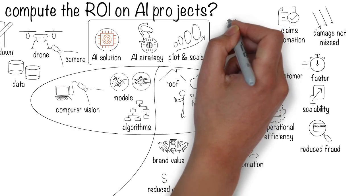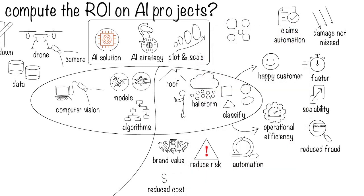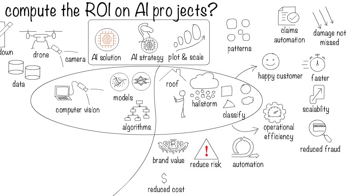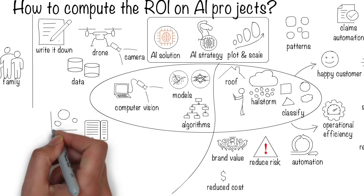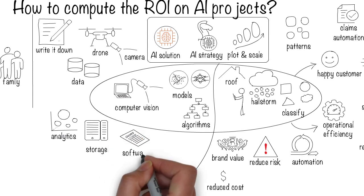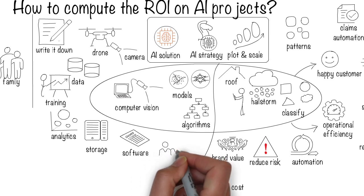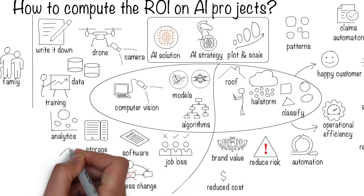For the cost side, we have immediate and recurring costs like hardware and storage, data analytics, software development, training operators and employees, some job loss, process changes, and maintenance.